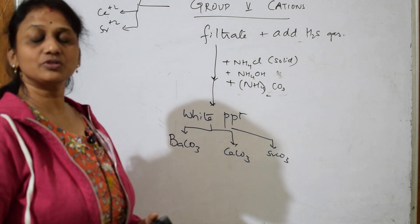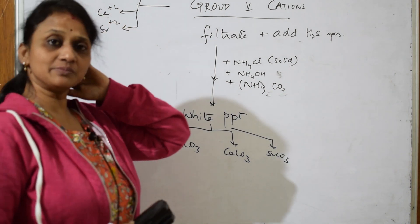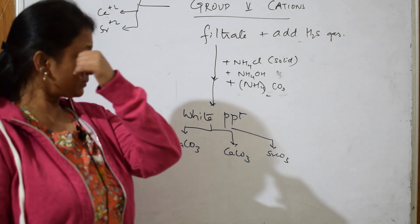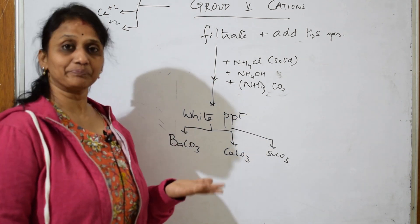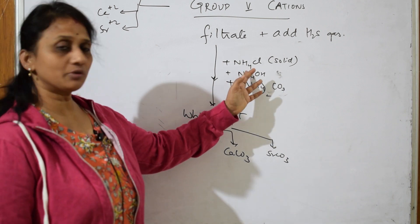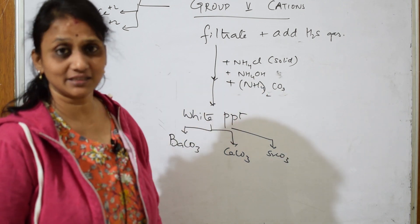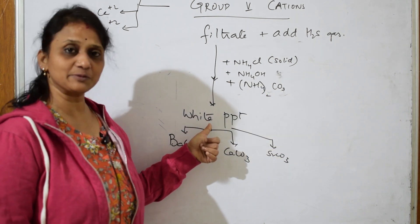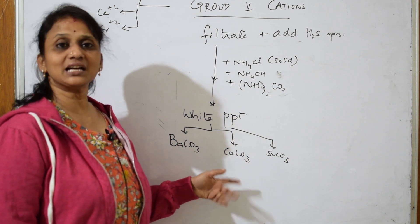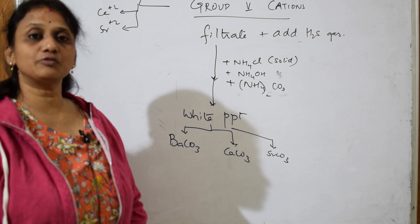You then do individual tests using acetic acid — that's the easiest approach. To summarize: Group 5 cations are barium, calcium, and strontium. The group reagent is ammonium hydroxide and ammonium carbonate (with ammonium chloride also added). Ammonium carbonate is in excess, so they precipitate as barium carbonate, calcium carbonate, and strontium carbonate — all white precipitates.